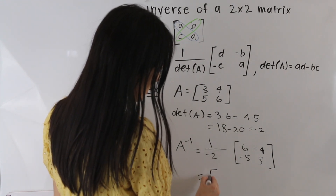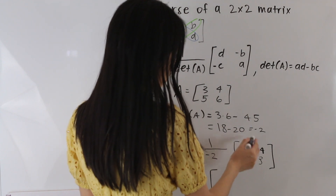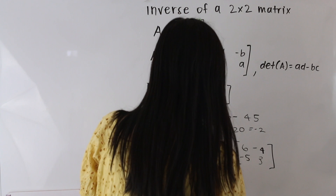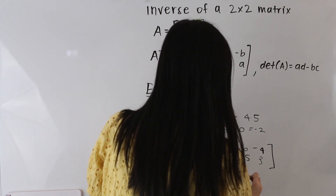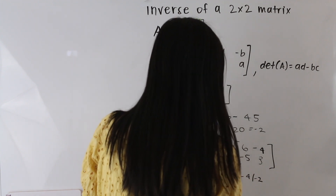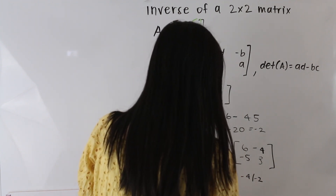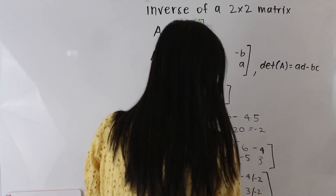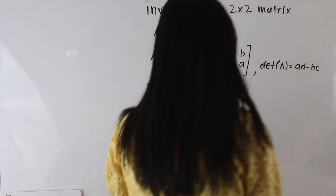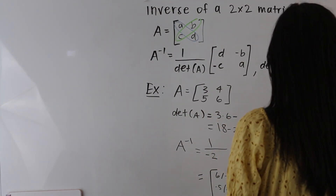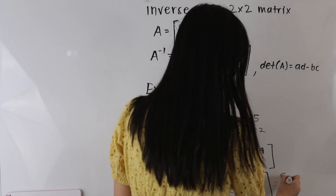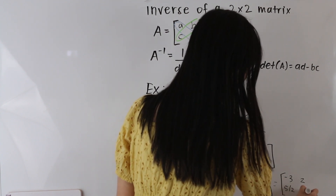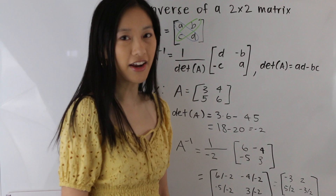Let's go ahead and distribute this negative 1 half into our matrix. So we end up with the following: 6 over negative 2, negative 4 over negative 2, negative 5 over negative 2, and 3 over negative 2. Simplifying this, we get negative 3, 2, 5 halves, and negative 3 halves. And that is our final answer.